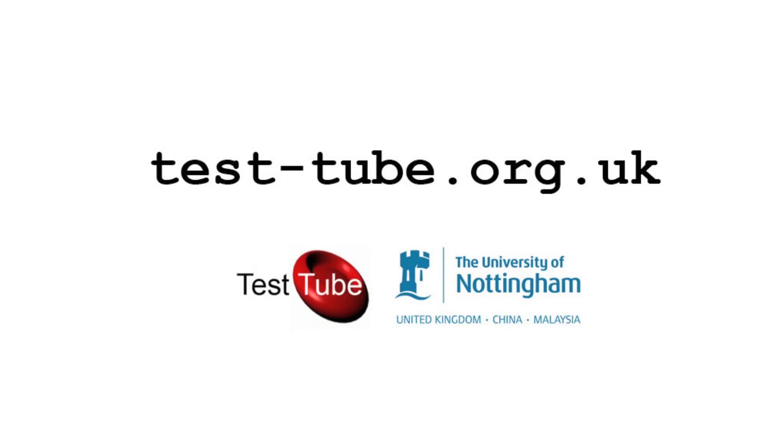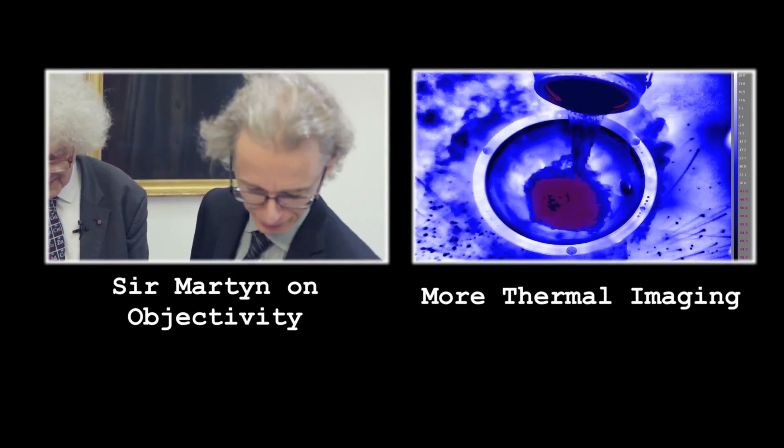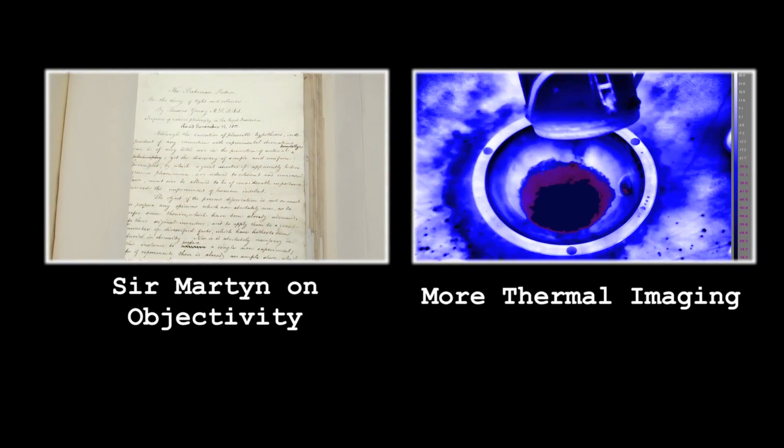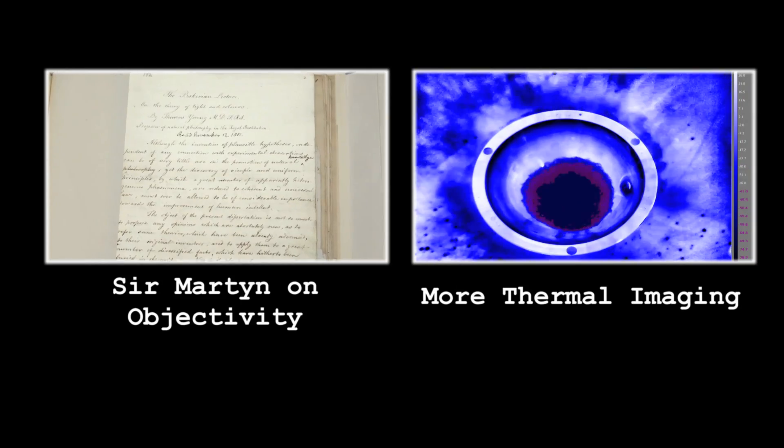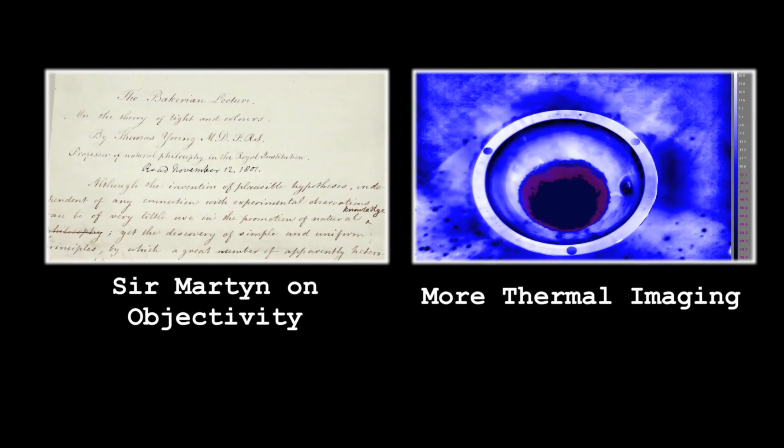I'm going to show Professor Poliakoff today. Well, this is probably one of the most famous papers we have in the collection. This is Thomas Young's Bakerian lecture on the theory of light and colors. This is Young challenging Sir Isaac Newton.